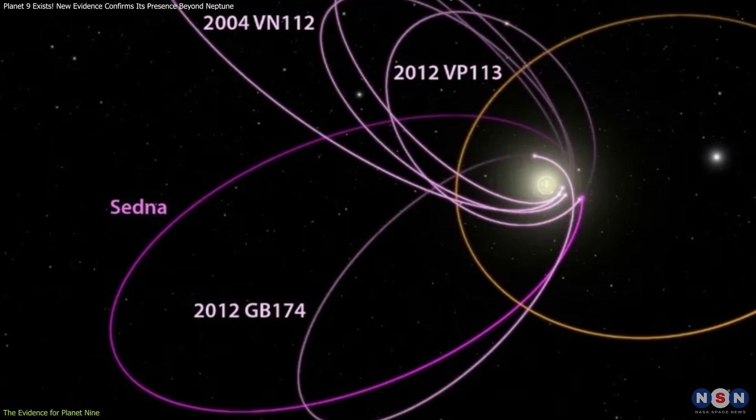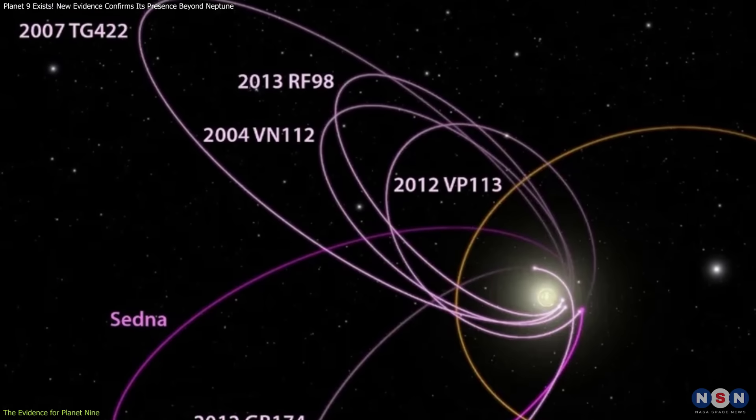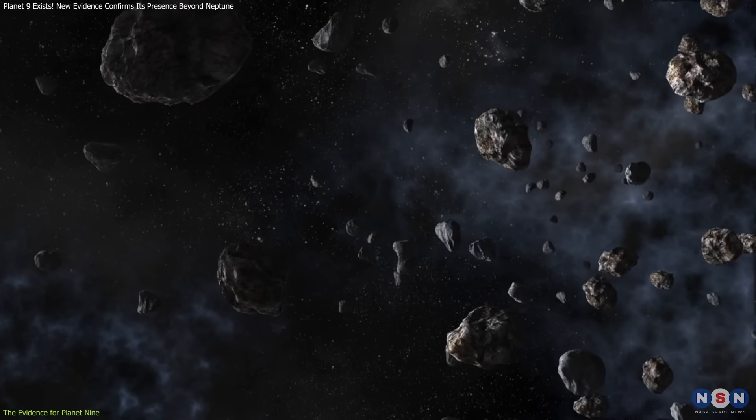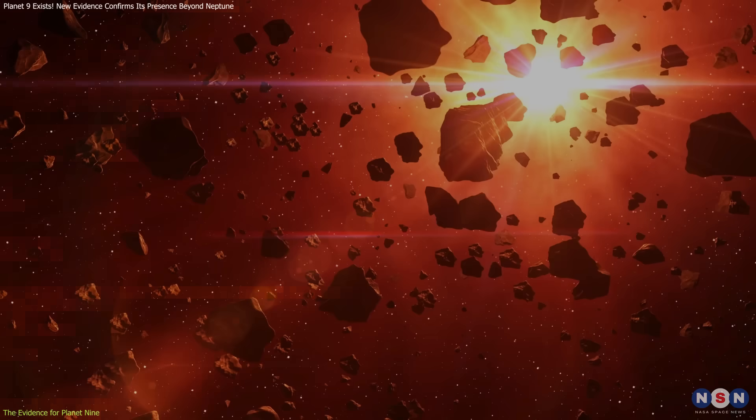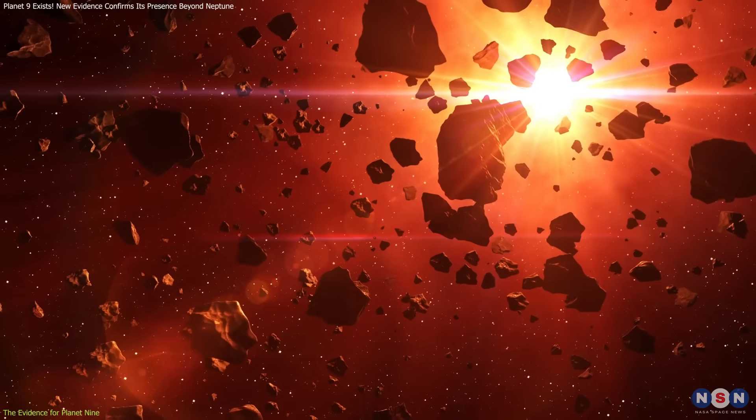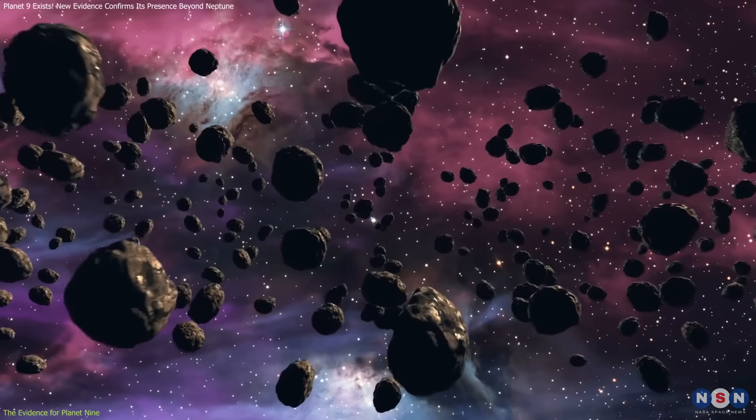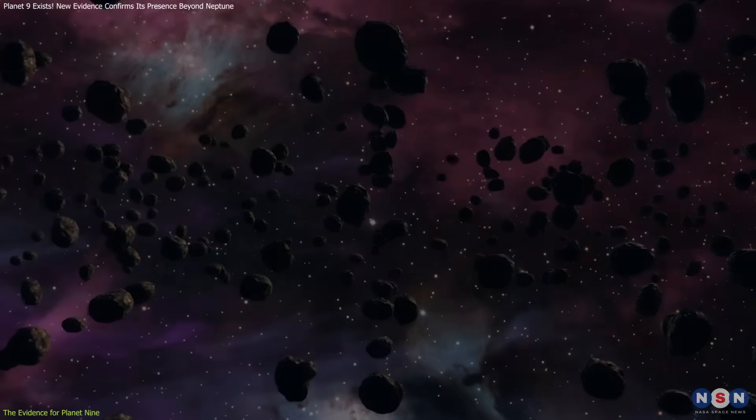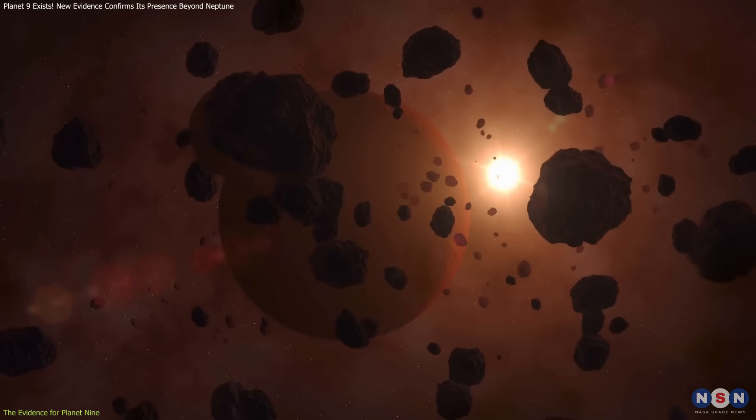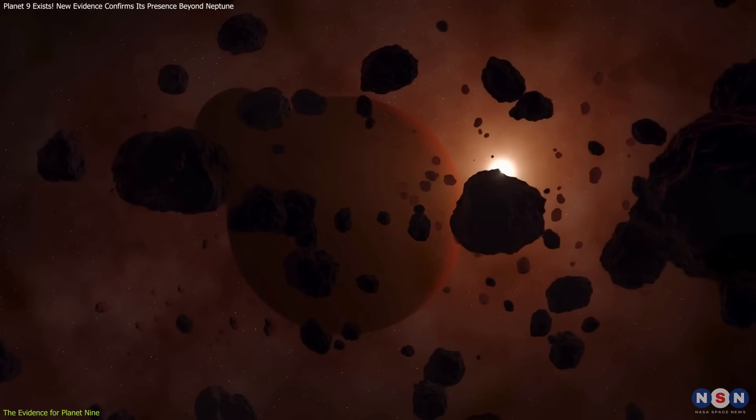Their orbits are tilted at steep angles, making them outliers in our cosmic neighborhood. But here's the kicker: these TNOs shouldn't behave like this on their own. Something is guiding them. This strange clustering of orbits, where the object's closest approaches to the Sun and their farthest points all align, led scientists to speculate Planet Nine. This planet's gravitational influence could be the key to explaining why these icy bodies move the way they do.